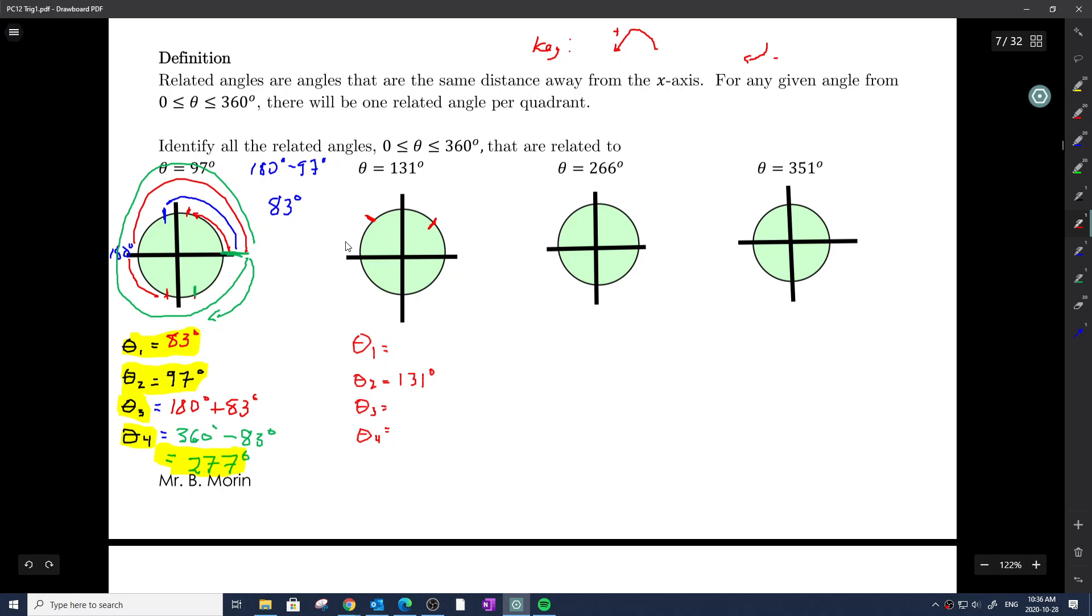Here's 131. If I go 180 subtract 131, that will give me this part that's remaining here. That will give me the distance away from the x-axis. So my related angle, or my reference angle theta r, the distance away from the x-axis, is 49 degrees. Therefore, my theta 1 is going to be 49 degrees. That's the angle that is 49 degrees.